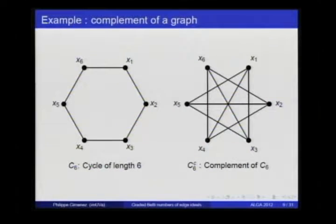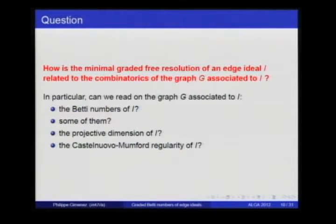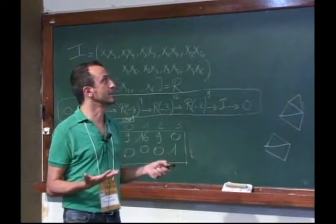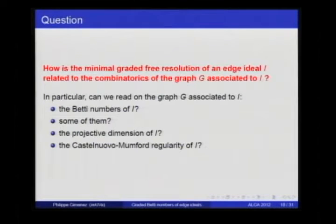As an example, a cycle of length 6 and its complement — we put all the edges that are missing in the complete graph. Our aim is to relate the Betti numbers of an edge ideal to the combinatorics of the graph: how can we read the Betti numbers, the projective dimension, or the Castelnuovo-Mumford regularity from the graph? In general this cannot be done completely, but we will say something about some of the Betti numbers in the Betti diagram.